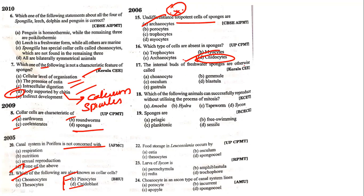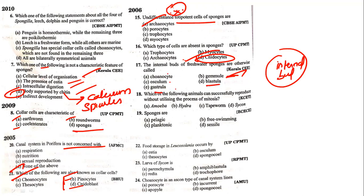The internal bud of freshwater sponges is otherwise called? Already mentioned — there will be internal bud formation, and that is called gemmules. Choanocytes is a collar cell. Osculum is an opening where water is released. Blastula produces the embryo; gastrula produces germ layers. So the answer is gemmules.